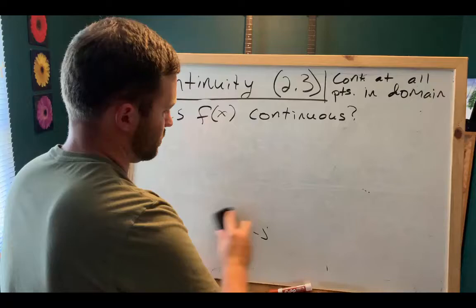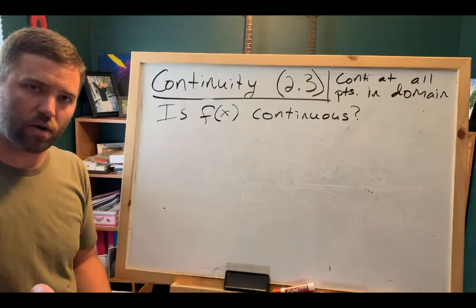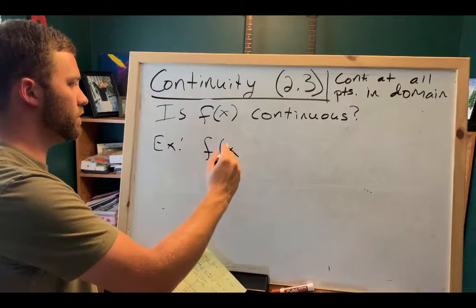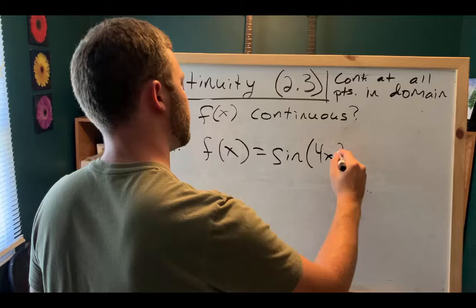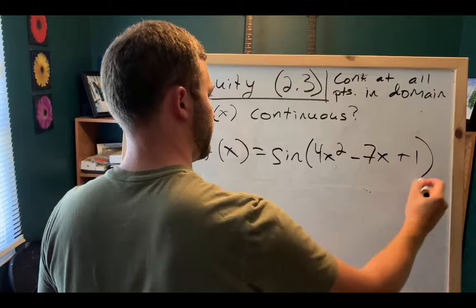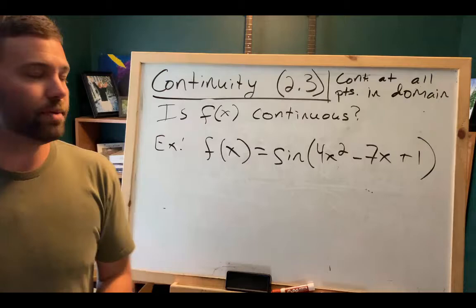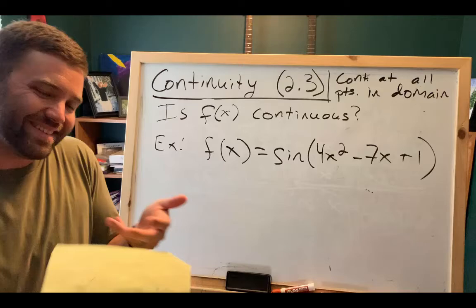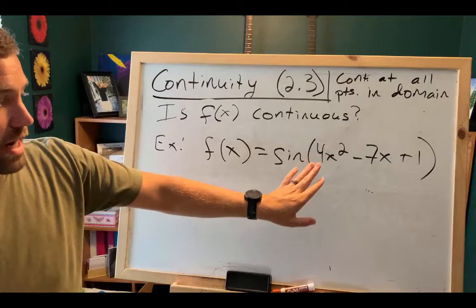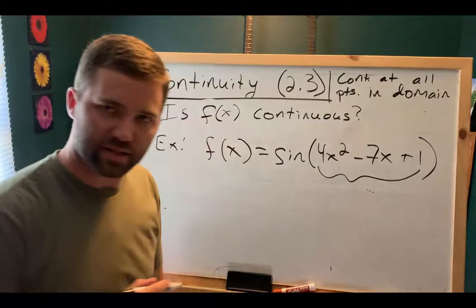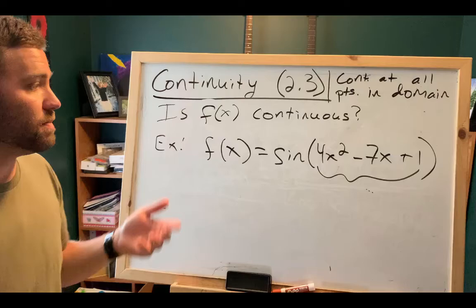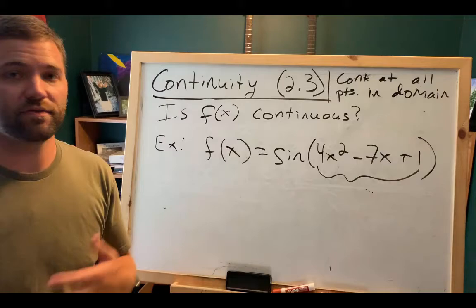Let's try another one: f of x equals sine of (4x squared minus 7x plus 1). You probably have no idea what this looks like, but you don't need to because you can look at the parts of the function and reason to your conclusion. The inside part is a quadratic — we know that's a continuous function. The outside part is sine, which we know is a continuous function. Because this is the composite of continuous functions, it must also be continuous. We don't even need to know what the graph looks like.